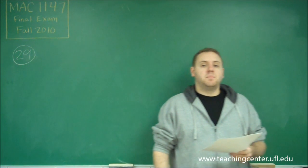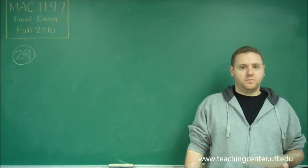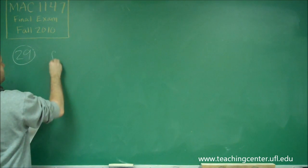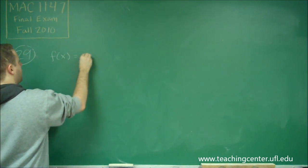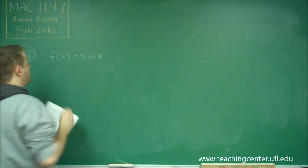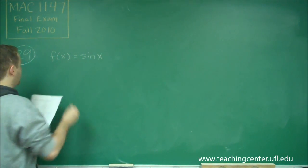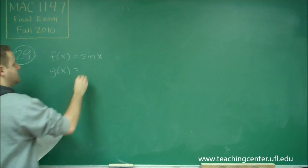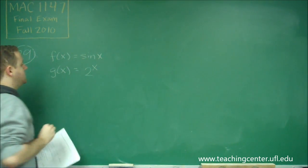In problem 29 we're going to be doing a more complicated function composition problem. So we know two things to start. We know that f of x is equal to sin of x, and we know that g of x is equal to 2 to the x power.